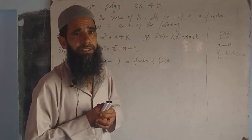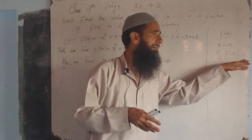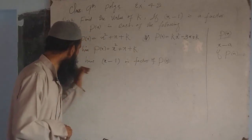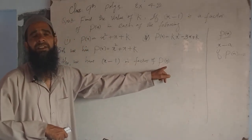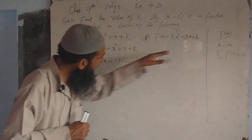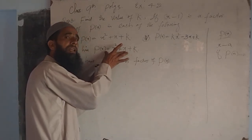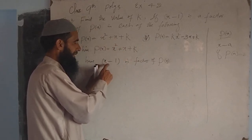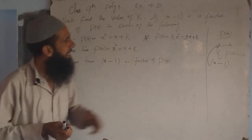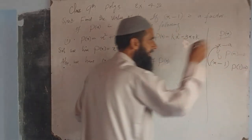p(x) is a polynomial whose degree is greater than or equal to 1. x-a is a factor if p(a) = 0, and if p(a) = 0, then x-a is a factor. Here x-1 is a factor of p(x) = x² + x + k. Comparing x-a with x-1, we get a = 1. So p(1) must be equal to 0.